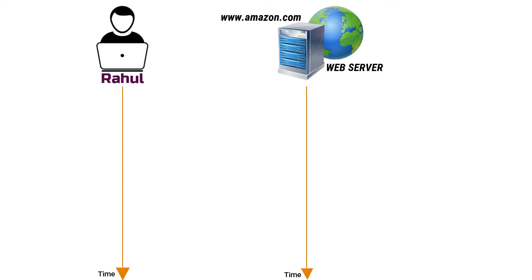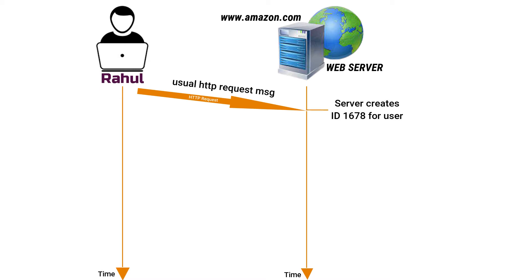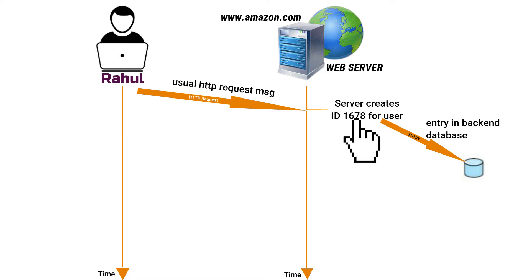When the request comes into the Amazon web server, the server creates a unique identification number and creates an entry in its back-end database indexed by that identification number. For example, 1678 is the unique identification number assigned to Rahul's request.